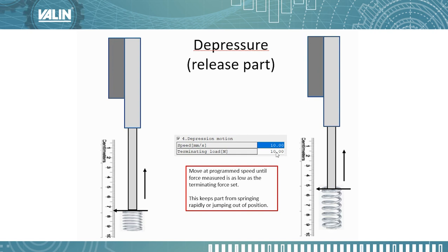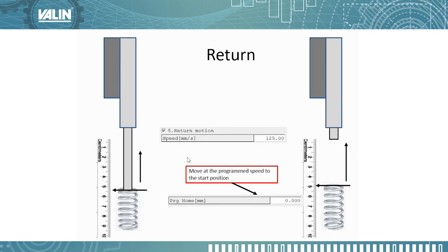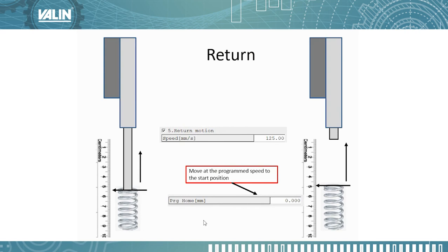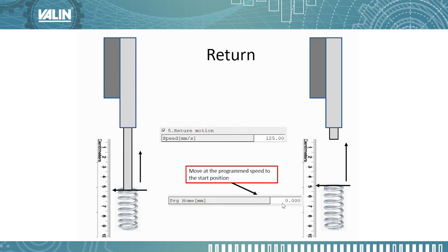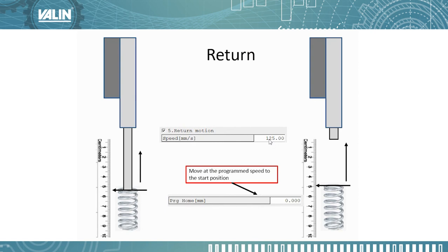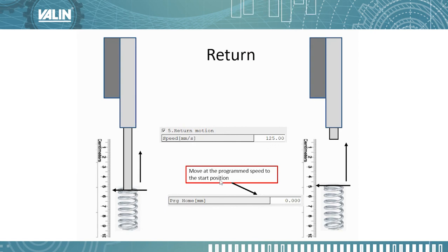Once we pass that point, we move to the return step, which is simple — it's just a return to the programmed home position as set in the programming parameters, and it's going to move at the set speed until it reaches there. After that, we're done with the whole motion program.